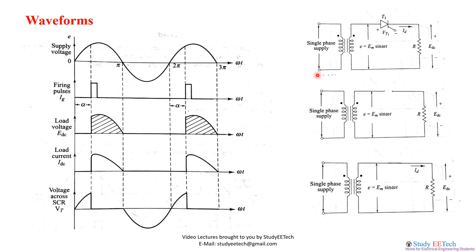To understand the waveform, we have taken the equivalent circuits. The input voltage is Em·sin(ωt), shown here. The firing pulses given to thyristor T1 are applied at angle alpha, where alpha is between zero and 90 degrees — just before the 90-degree point as we can see in the waveform. A short pulse is given to the thyristor to trigger it. This short pulse is required for triggering the thyristor gate current Ig, and after the pulse is removed, the thyristor will remain in the on-state until the current goes below the holding current, which we have discussed in a previous video on this channel.